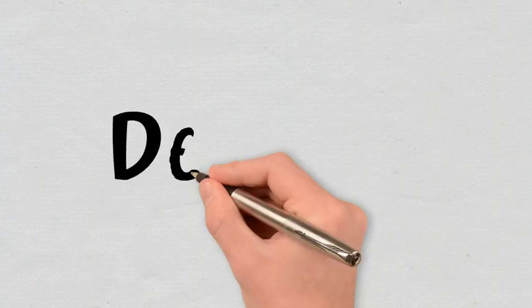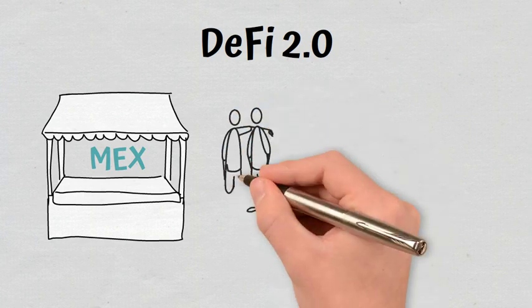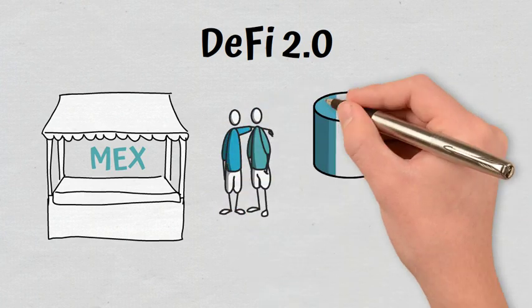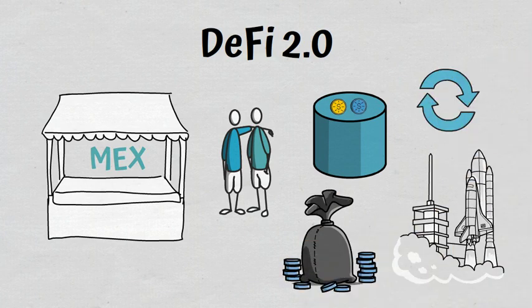DeFi 2.0. Once mixed, the decentralized exchange of the ecosystem is launched, the Elrond users will be able to access the main DeFi services, that is, liquidity pools, swaps, synthetic assets, a launchpad, and much more.